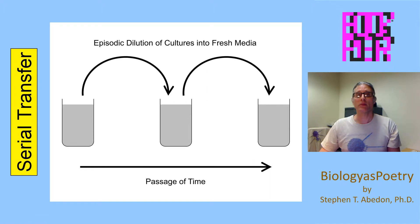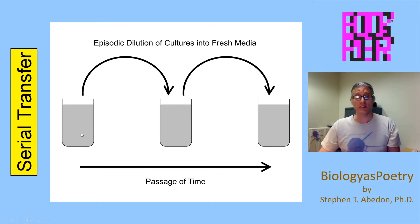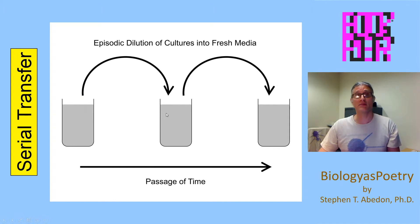Serial transfer, or serial passage, is simply the dilution of organisms — taking them from one environment and putting them into a subsequent environment. You're taking a subset of the organisms from this environment and putting them into the next environment, which presumably doesn't contain any of the same type of organisms yet.